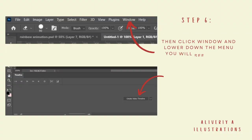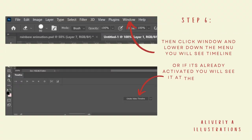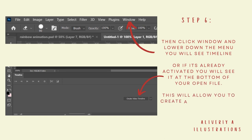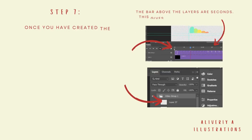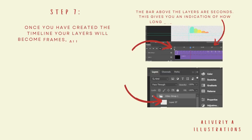Once your layers are ready and organized, click Window and lower down the menu you will see Timeline — or if it's already activated, you'll see it at the bottom of your open file. This will allow you to create a frame-by-frame video or GIF. Once you've created the timeline, your layers will become frames.